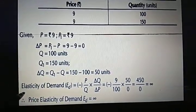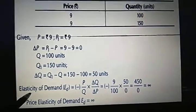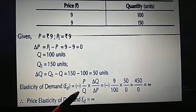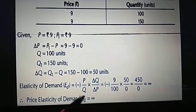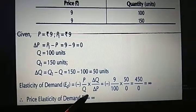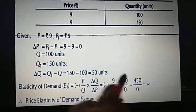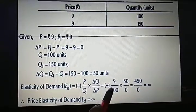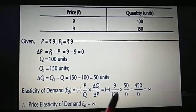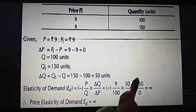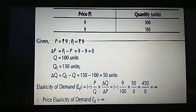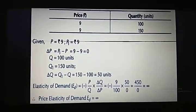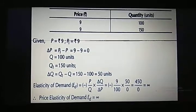We use the proportionate method formula: elasticity of demand equals delta Q upon delta P into P upon Q. Putting the values — delta Q is 50, delta P is 0, original price is 9, original quantity is 100 — we get 450 upon 0, which equals infinite. So in this case the price elasticity of demand is infinite, which means we call it perfectly elastic demand.